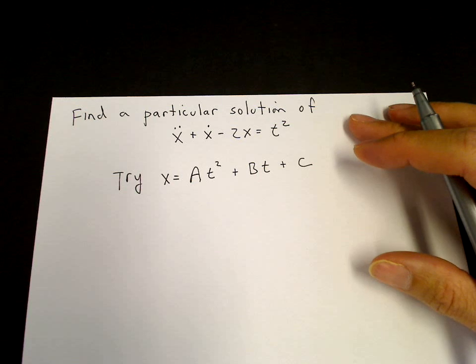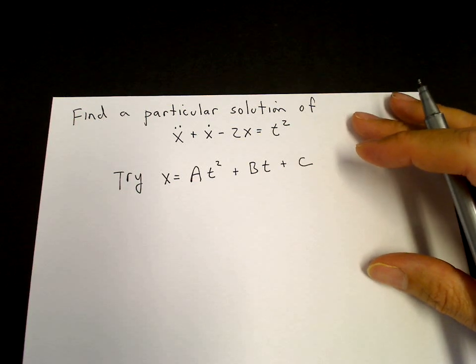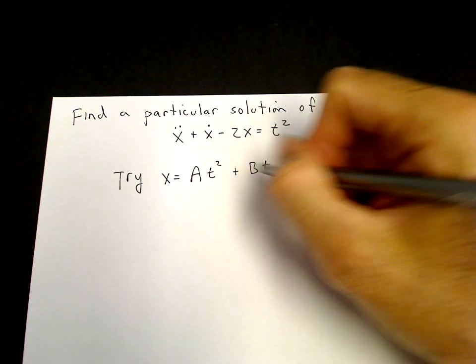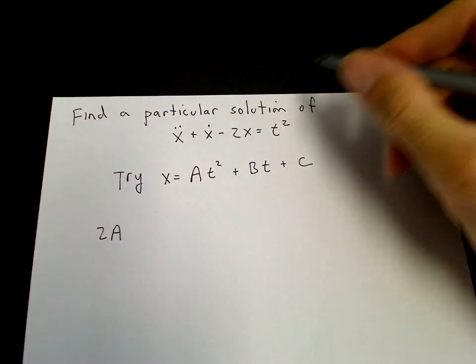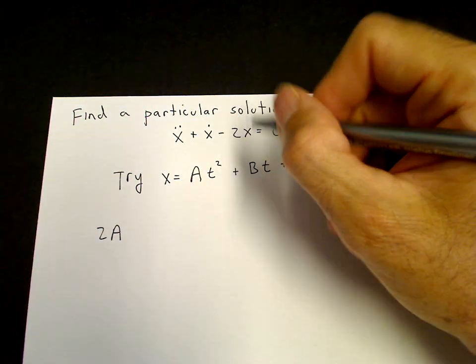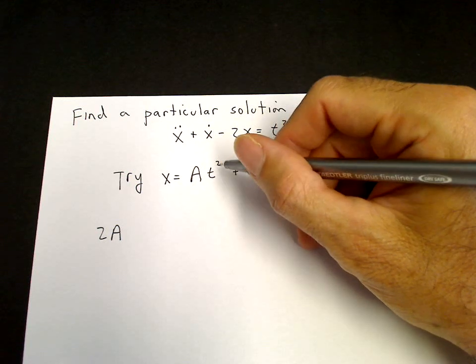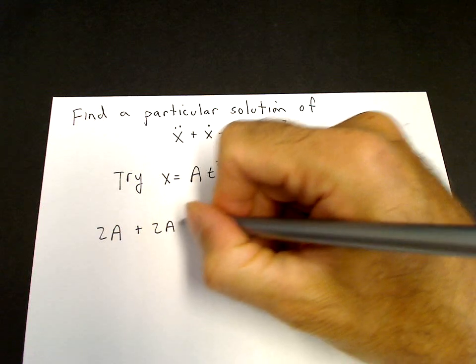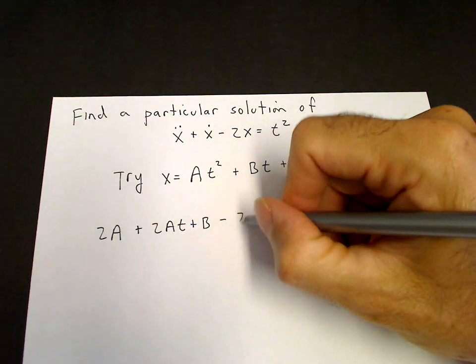And then we'll see that we end up with three equations and three unknowns. So if we substitute it into the left hand side, the second derivative will just give us 2A. The first derivative will give us 2At plus B.